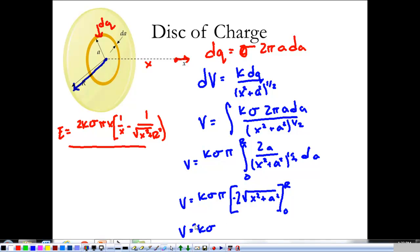Now, plugging in our limits, 2K·σ·π times [√(X² + R²) minus X]. So, that was fun. We're done with that, and the potential is 2K·σ·π times [X - √(X² + R²)]. And that's all we have for the disk of charge.